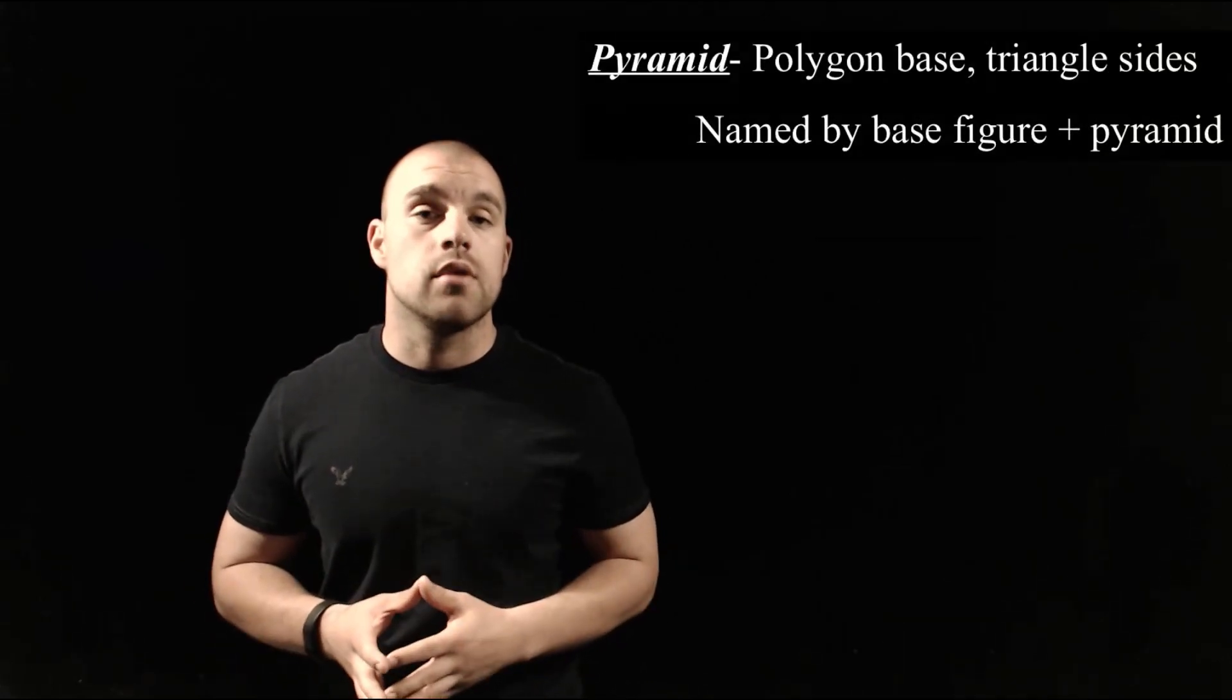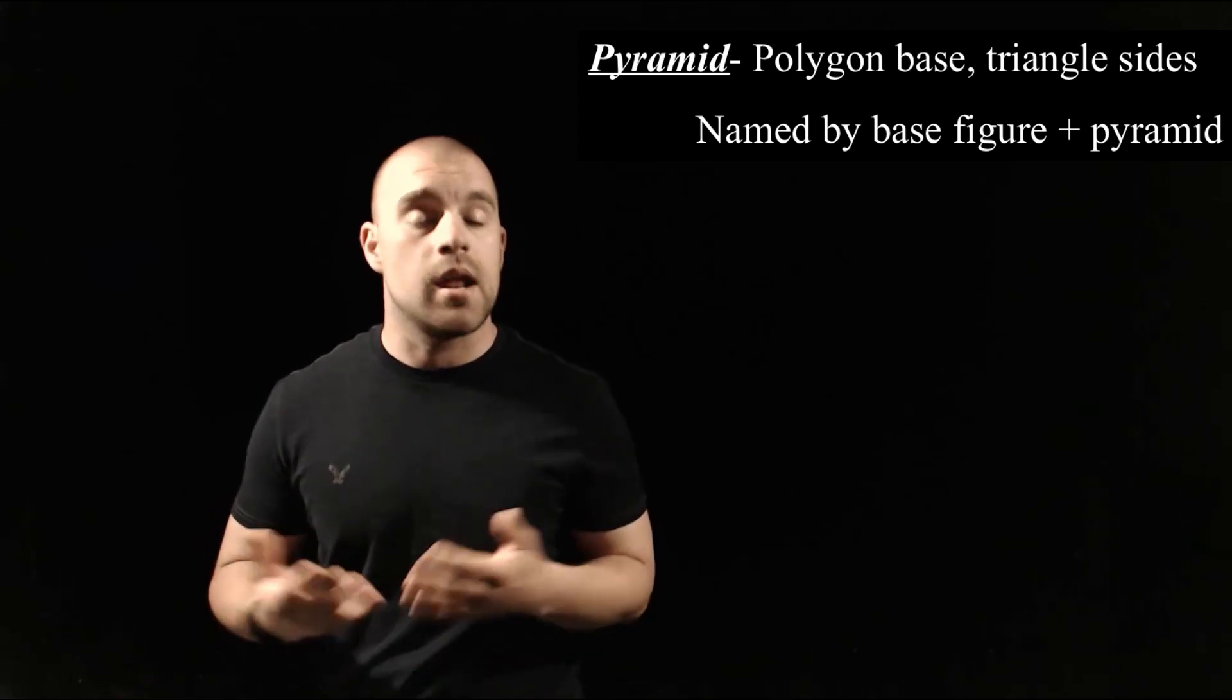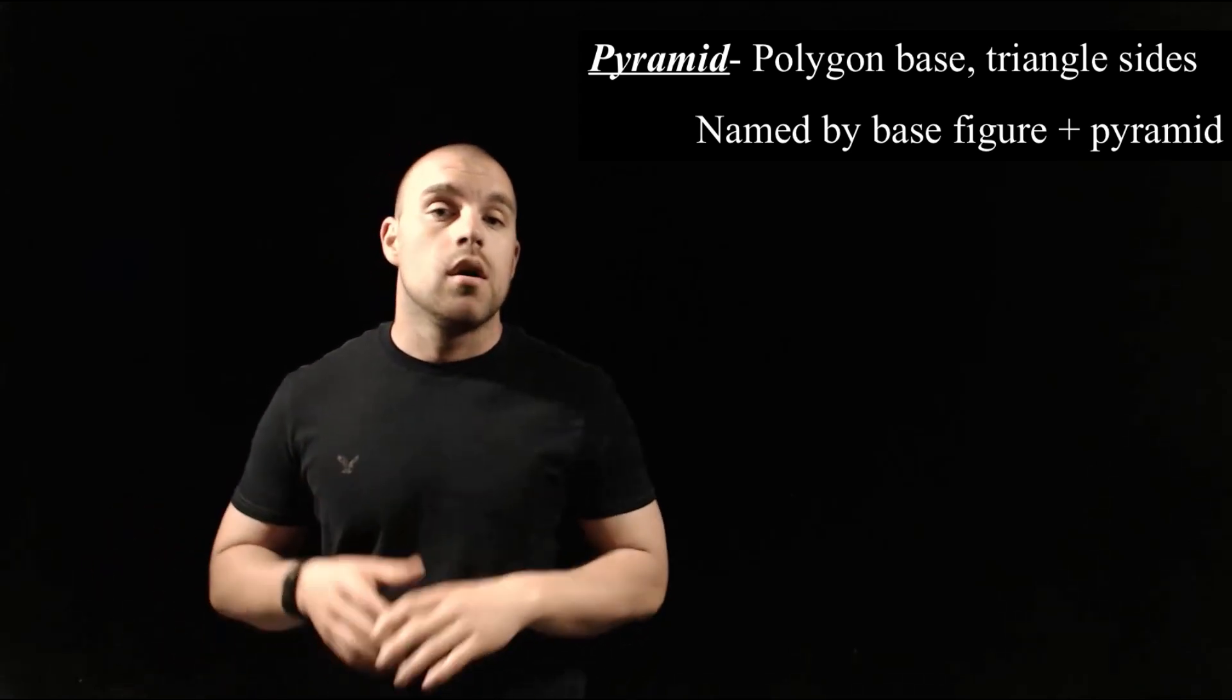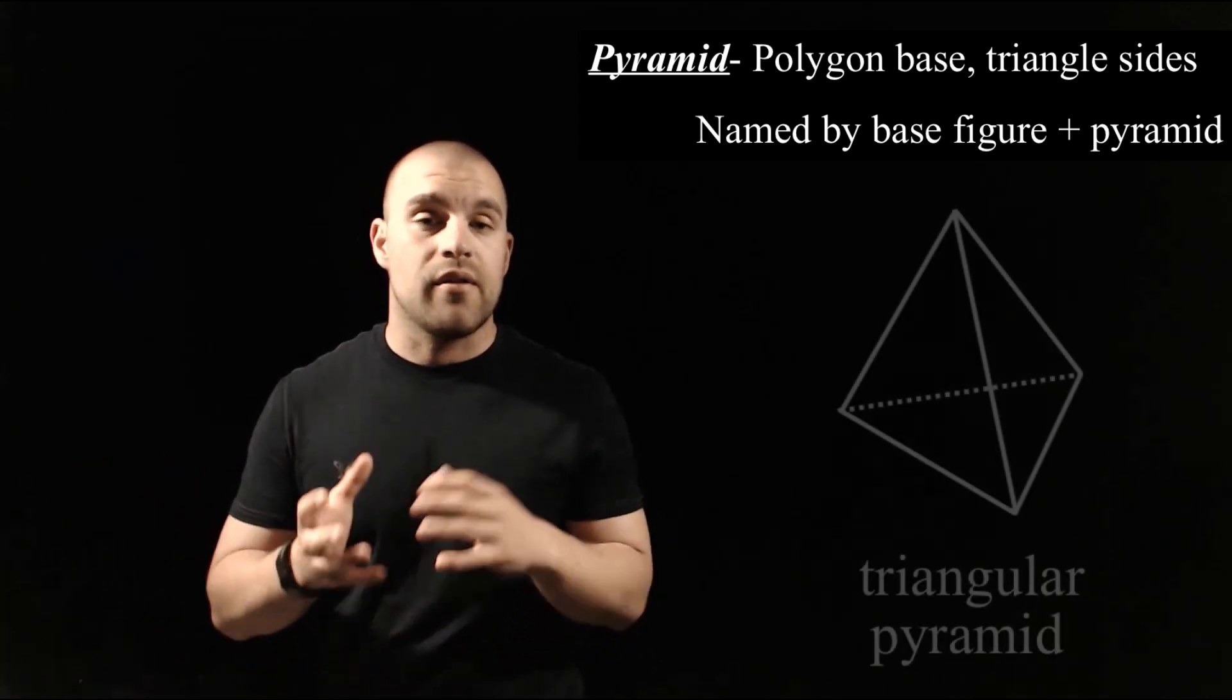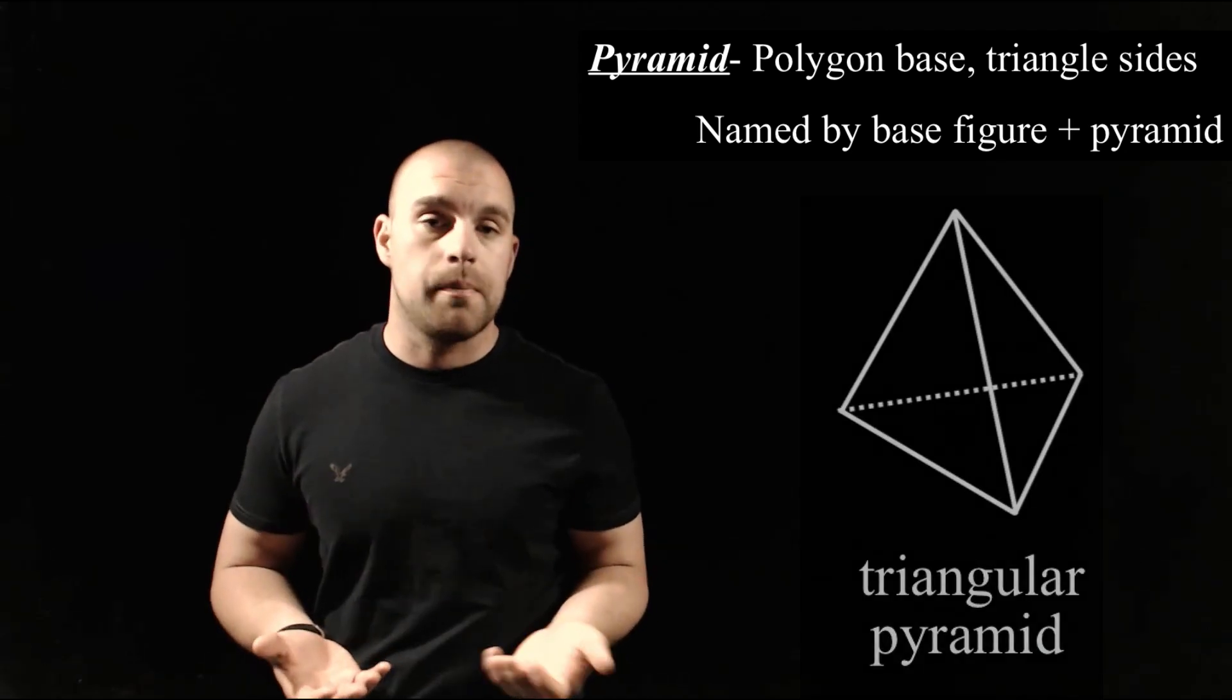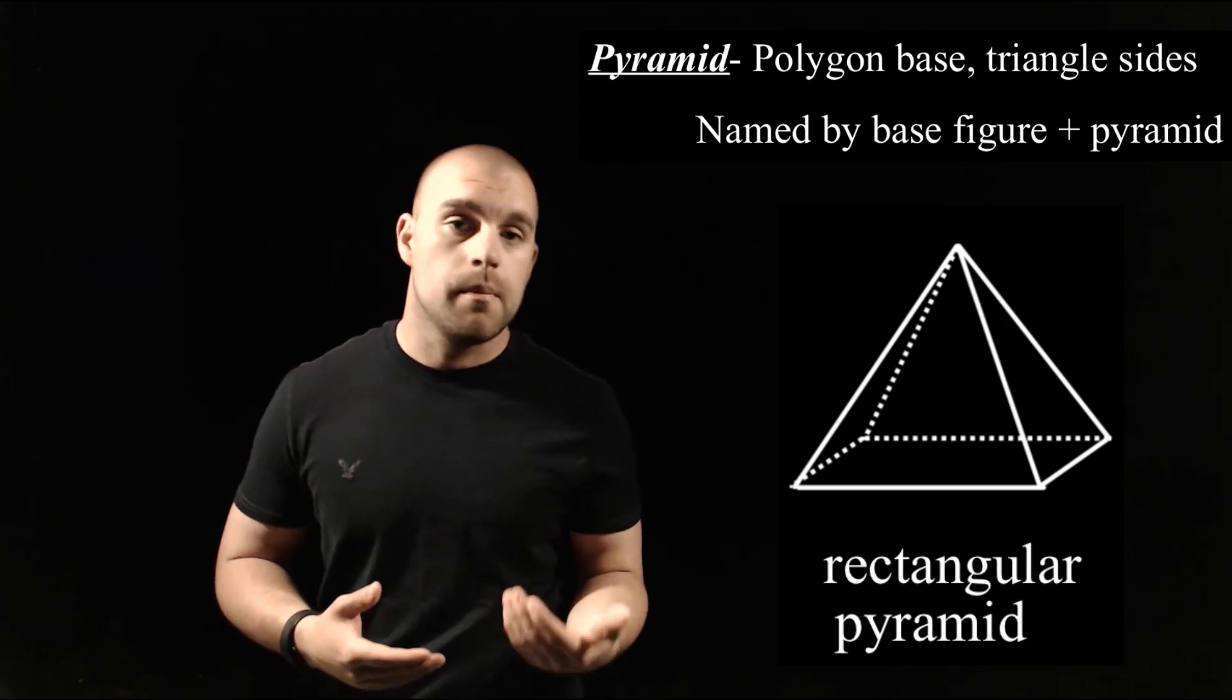Our other kind of polyhedra is a pyramid. So in a pyramid, we've got one base polygon and then the other faces are made up of triangles. And similar to naming a prism, to name a pyramid, we're going to take a look at what the base figure is and then add pyramid onto the end. So if we have a pyramid with a triangle base, then we would call that a triangular pyramid. Or if we had a pyramid with a rectangular base, we would call that a rectangular pyramid.